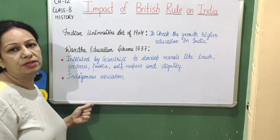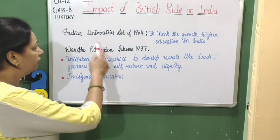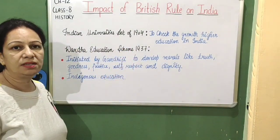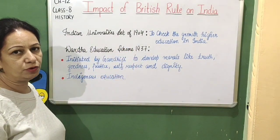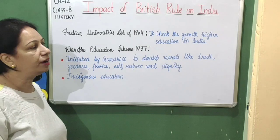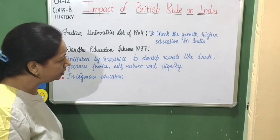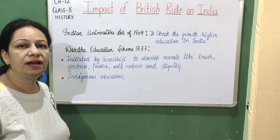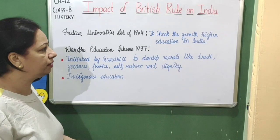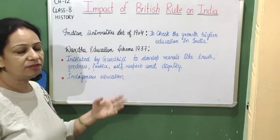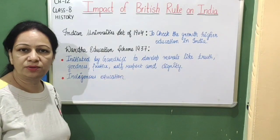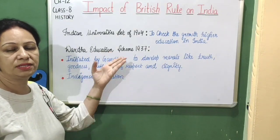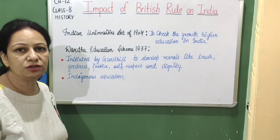The Indian Universities Act was passed in 1904, mainly to check the growth of higher education — that is, education at the college level — in India.